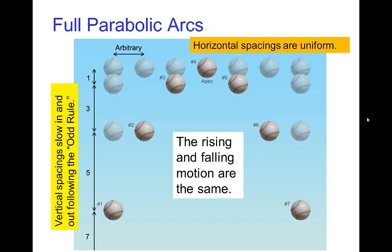Now, if we want to consider a full parabolic arc, like a ball thrown up into the air and then coming back down, all of this still applies. The horizontal spacings are uniform and constant. The vertical spacings follow the odd rule as they slow back out of the apex. Again, the slowing in and slowing out is just the same for the vertical spacings as if the ball was simply thrown straight up and falls straight back down.